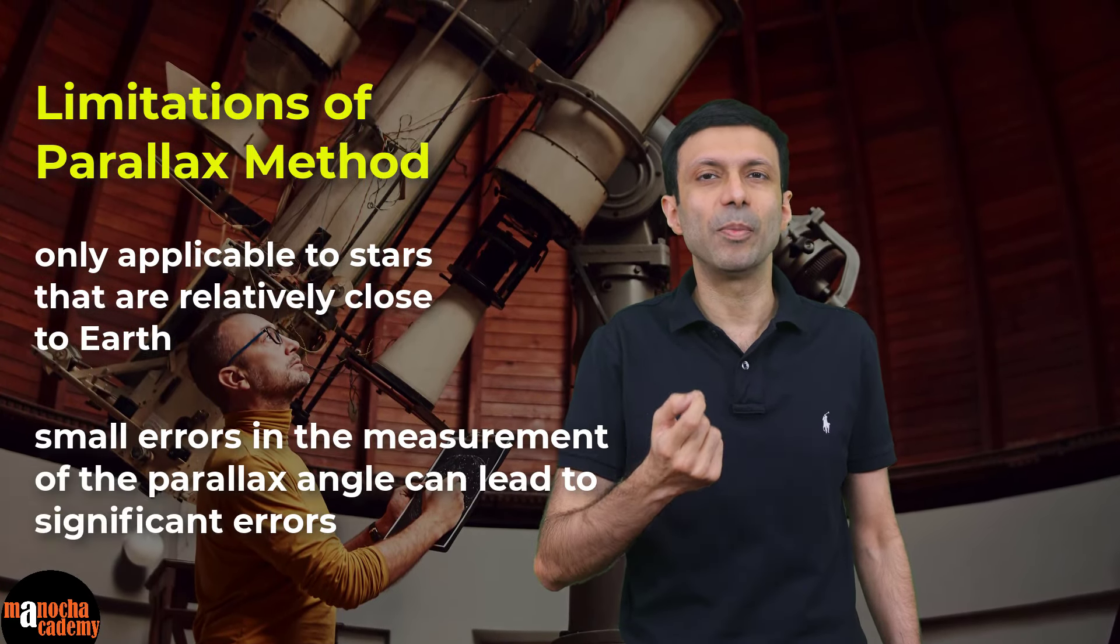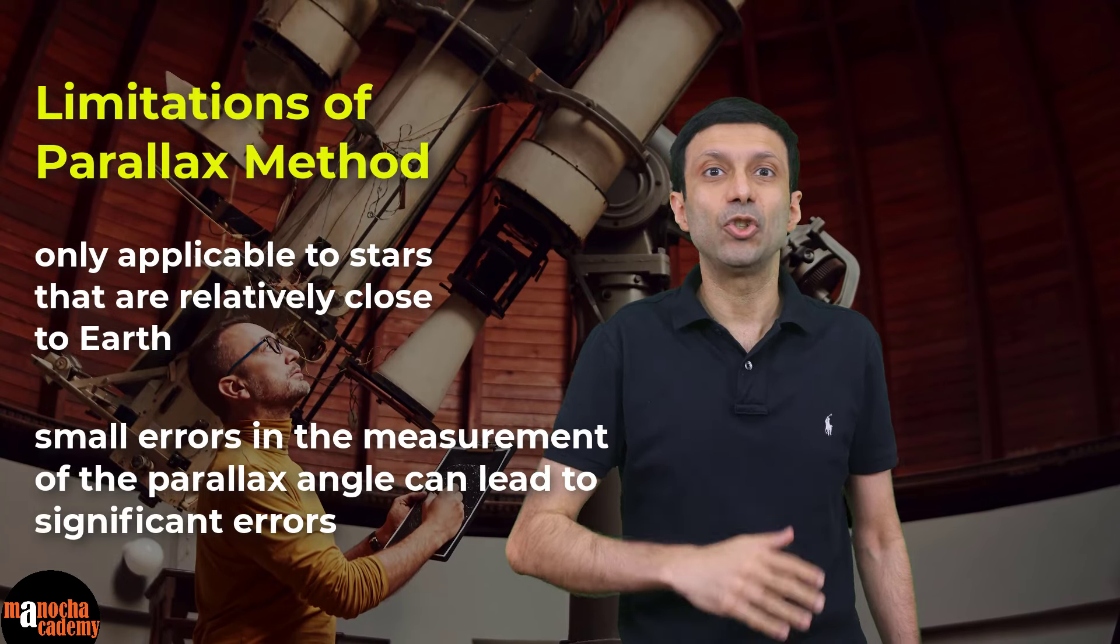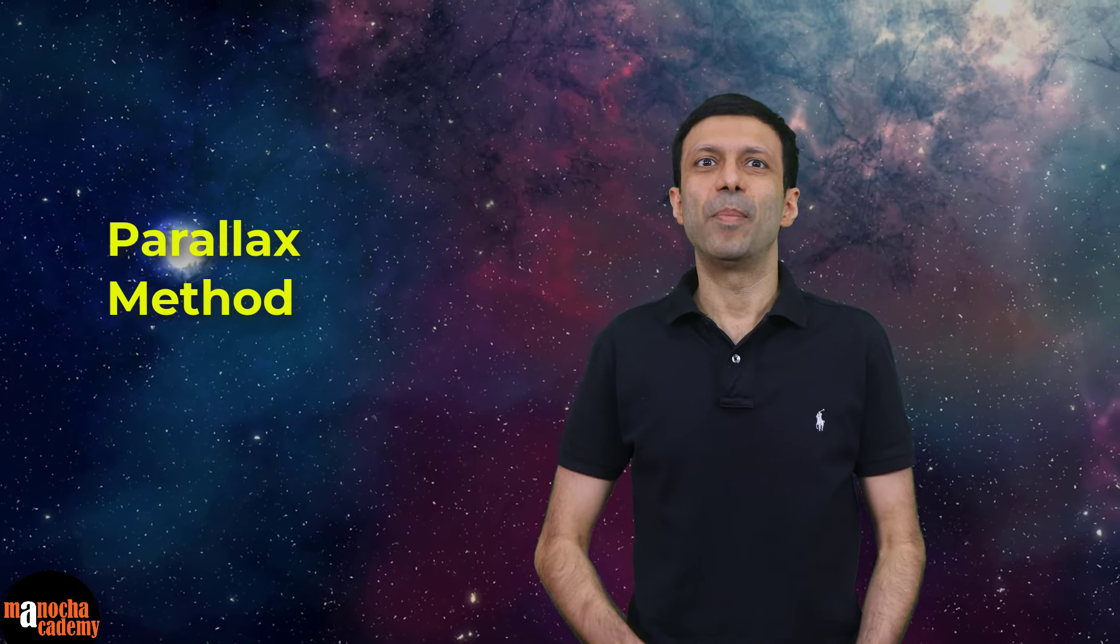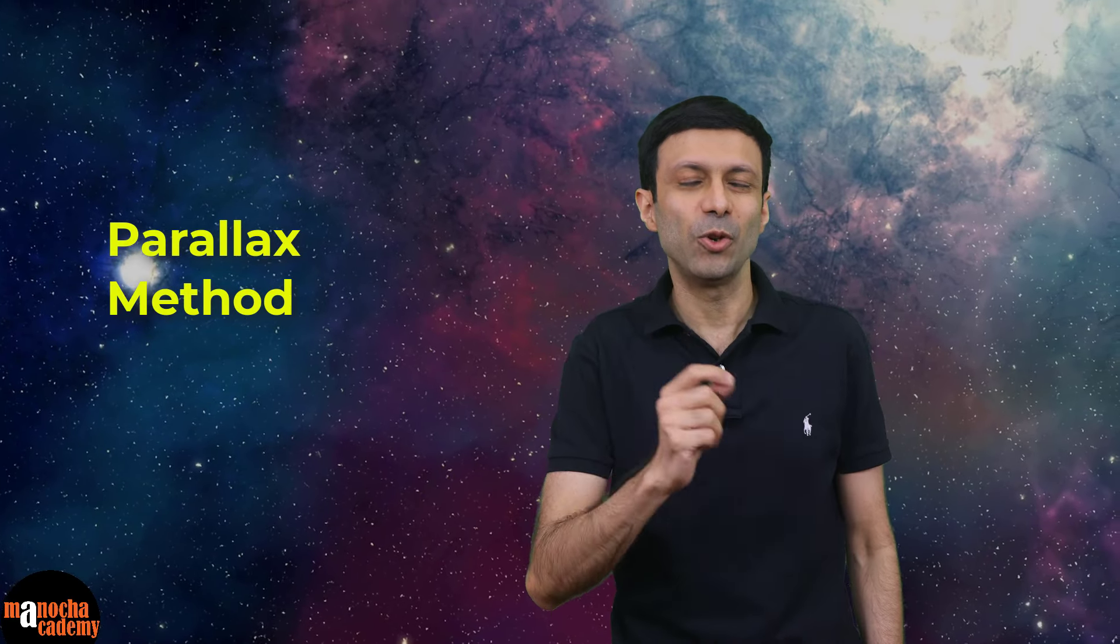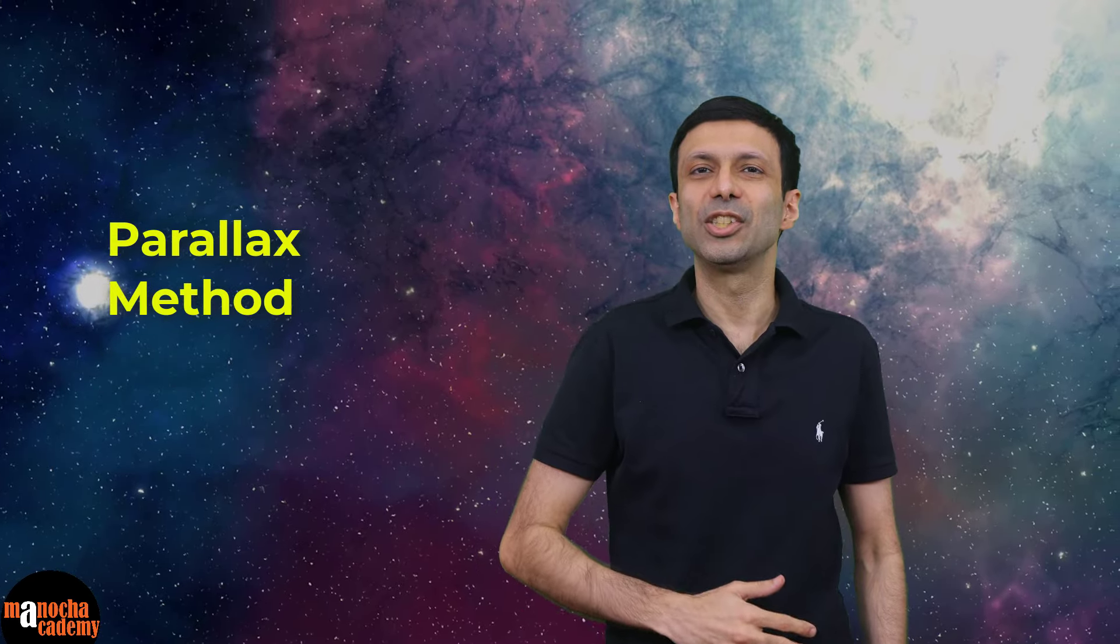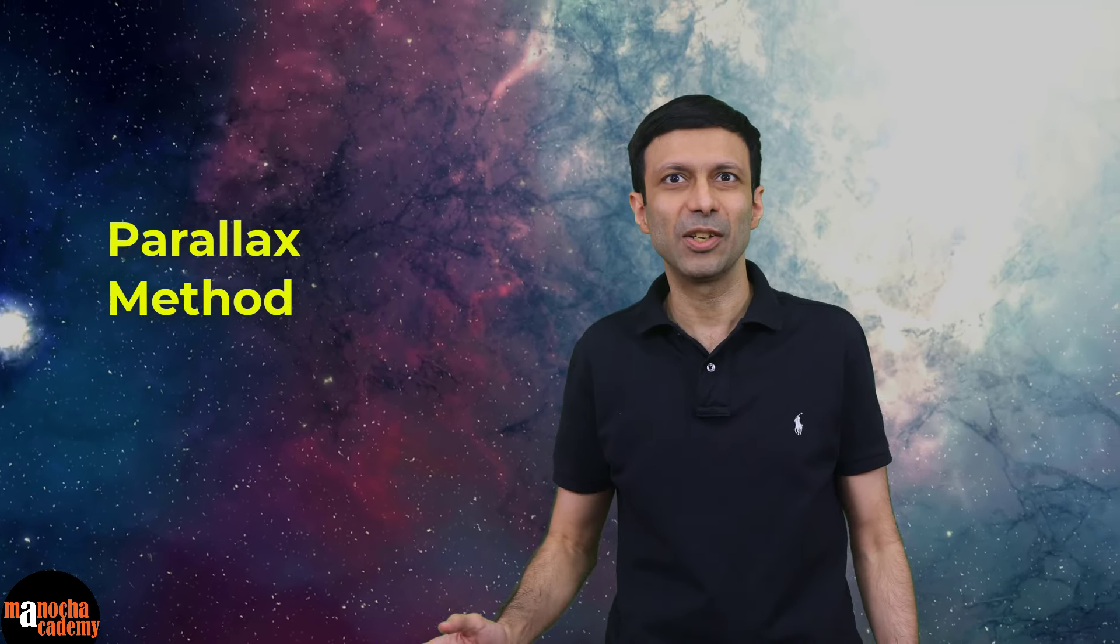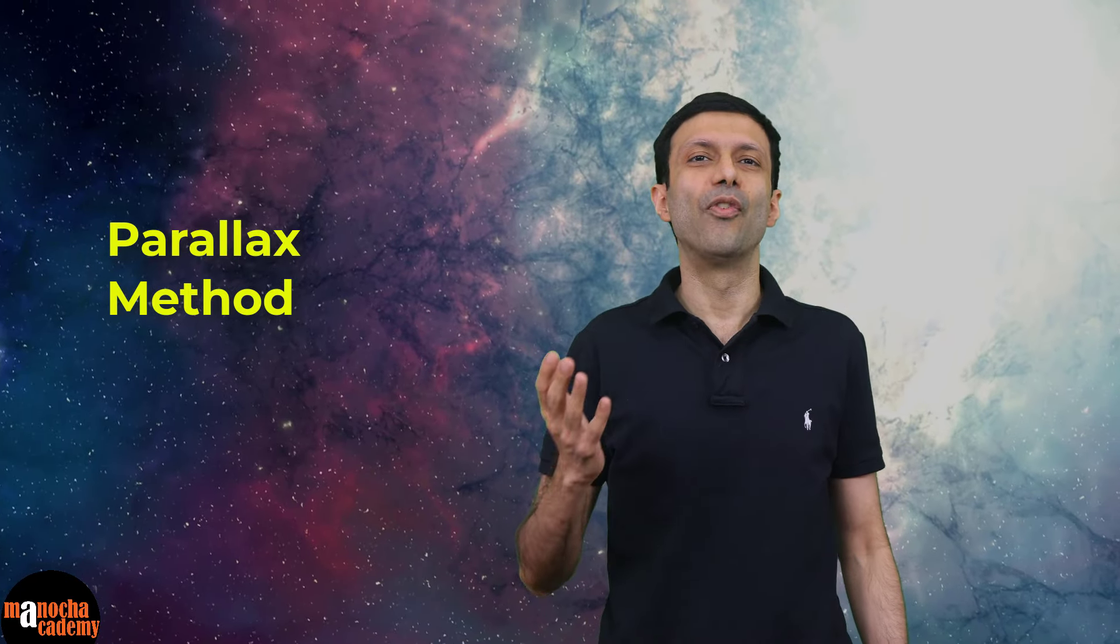Also small errors in the measurement of the parallax angle can lead to significant errors in the calculated distance. Despite these limitations, the parallax method remains a valuable tool for measuring the distances of nearby stars and planets, and it has been used extensively by astronomers for over a century.